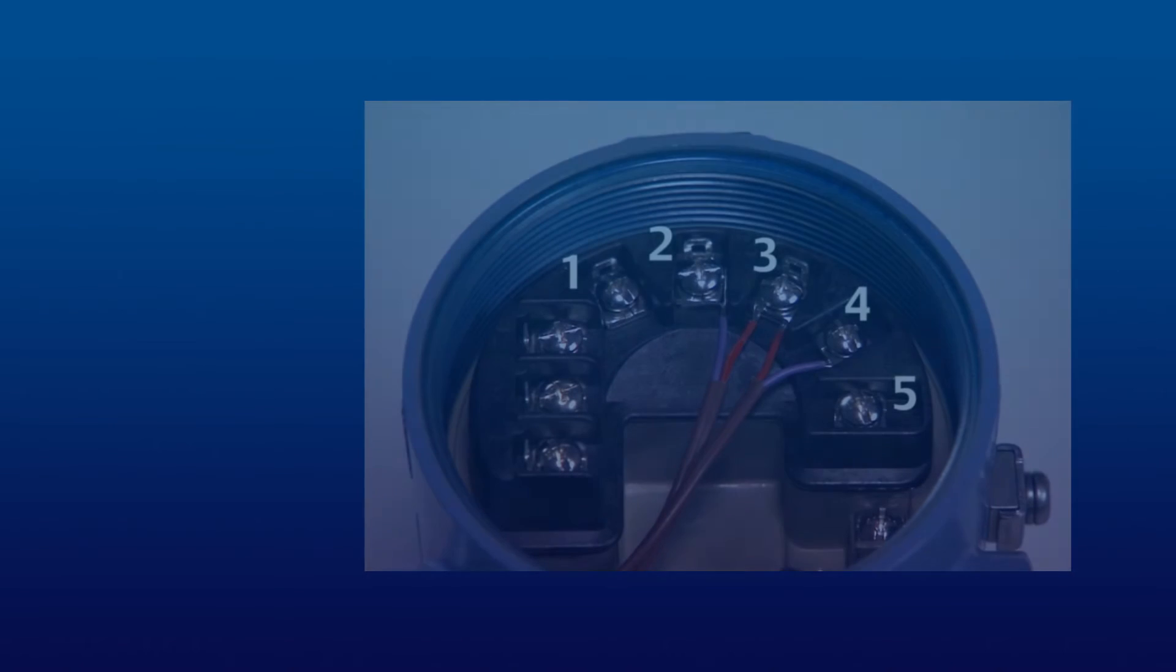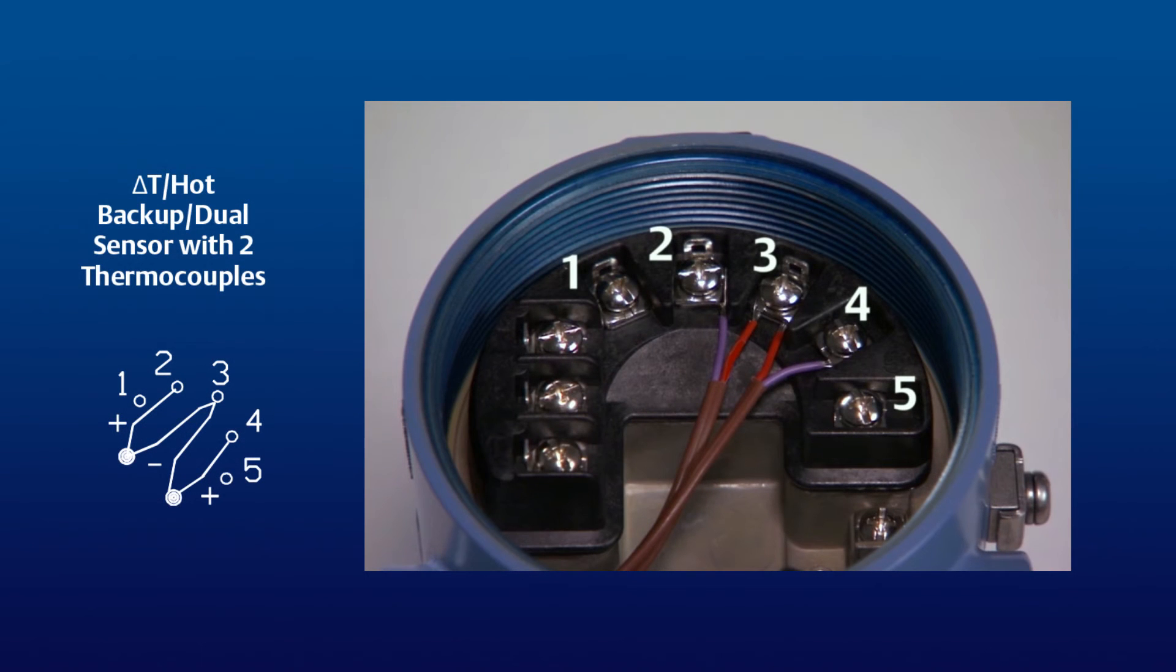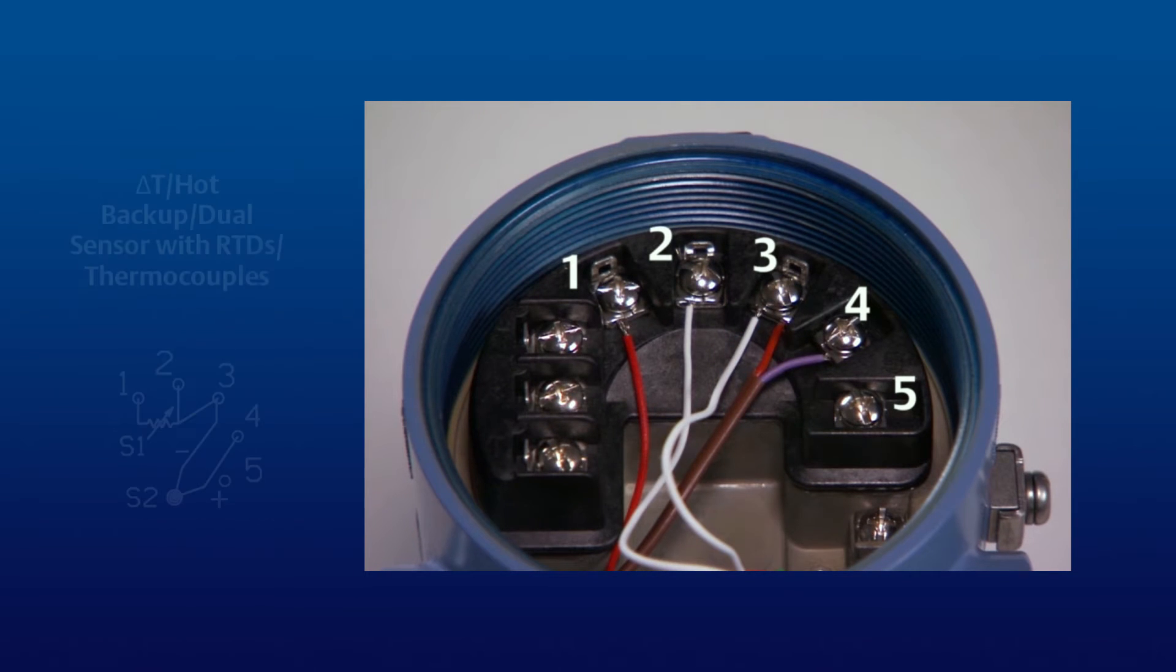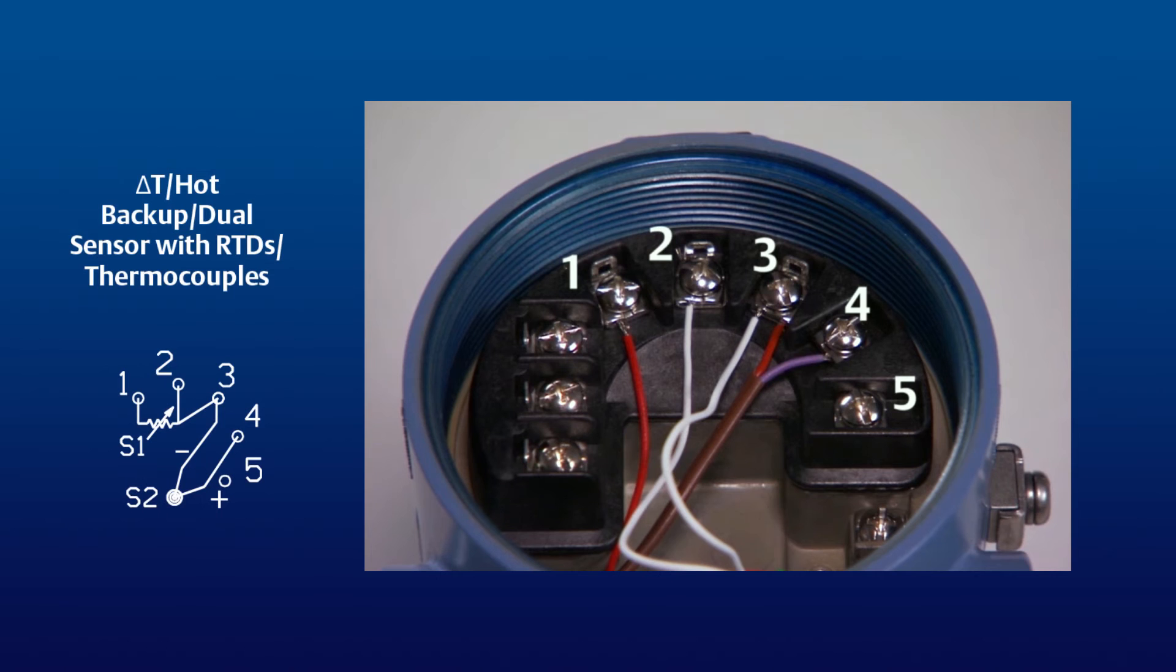Here is the proper wiring configuration when using two thermocouples. Note that for the first thermocouple, the positive wire is connected to terminal 2, and the negative wire is attached to terminal 3, along with the negative wire from the second thermocouple, while the positive wire is connected to terminal 4.